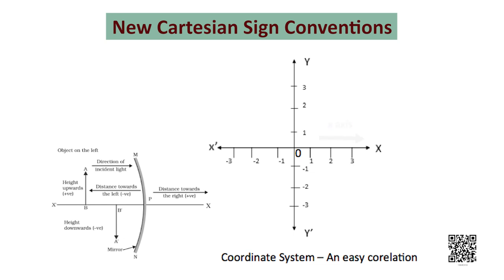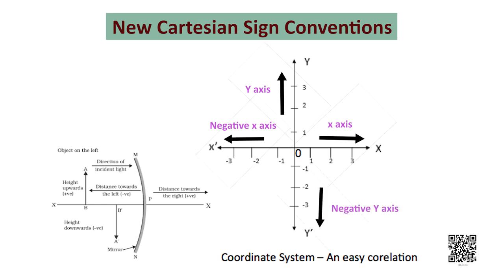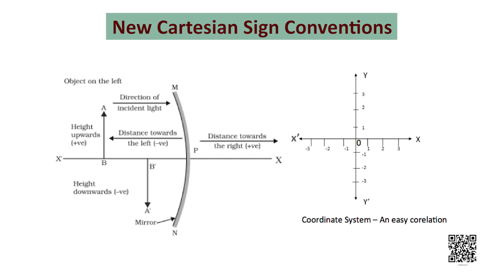All the distances measured to the right of the origin, i.e. along the positive x-axis, are taken as positive, while those measured to the left of the origin, i.e. along the negative x-axis, are taken as negative. Distances measured perpendicular to and below the principal axis along the negative y-axis are taken as negative. The above sign conventions can be easily related to the coordinate system. If we consider the pole to be the origin and the reflecting side of the mirror to be facing the left side, the coordinate system easily gives us the sign of the respective distances.